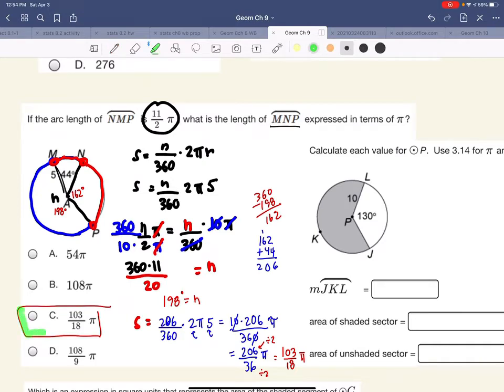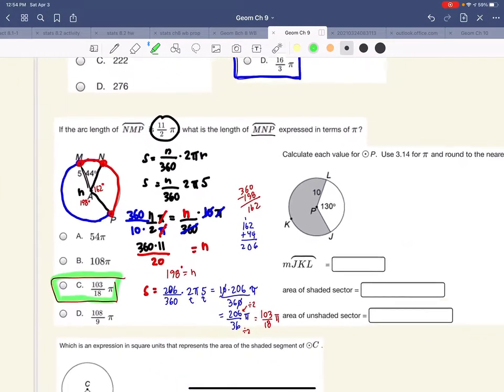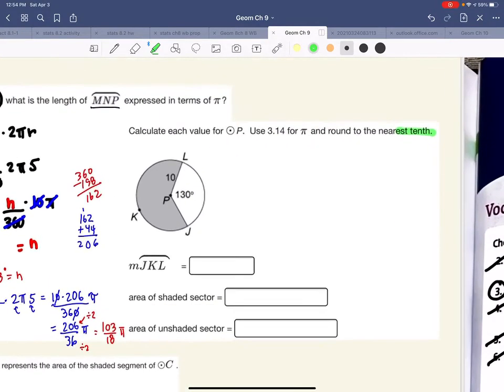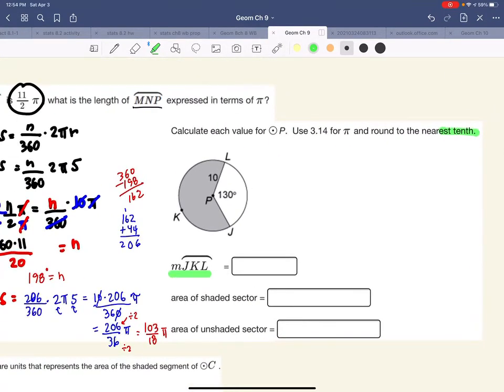All right. Now let's calculate some values and round to the nearest 10th. So what is the measure of J, K, L? So J through K to get to L.